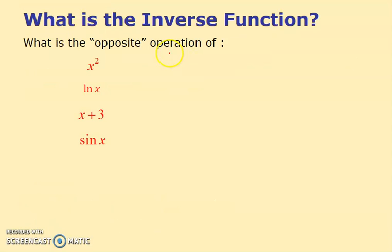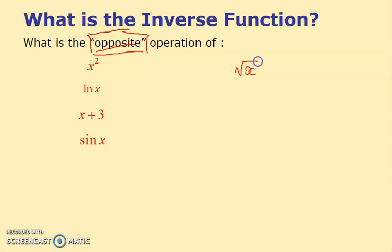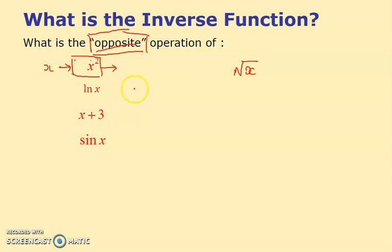Moving on to today's topic: inverse functions. One way to think about it is 'opposite' or 'undo'. You undo x² to get back to x — that's the square root function, so the inverse of x² is √x. Whatever number comes in, x goes in, gets squared, and comes out — the inverse undoes that.